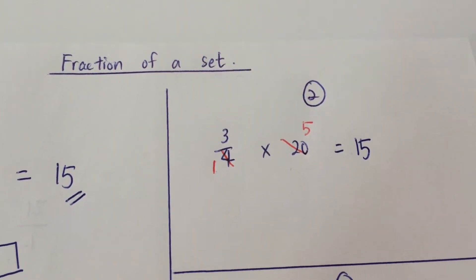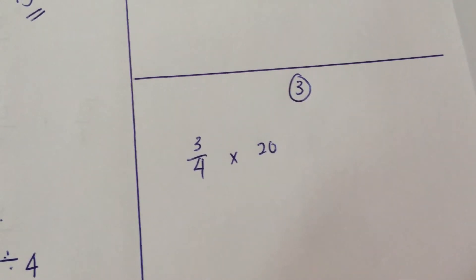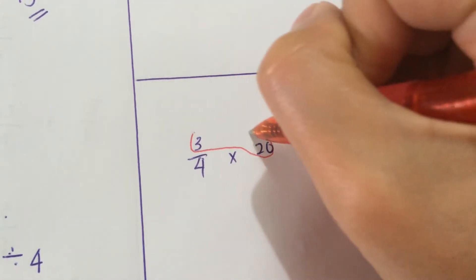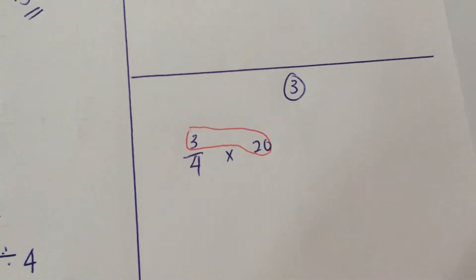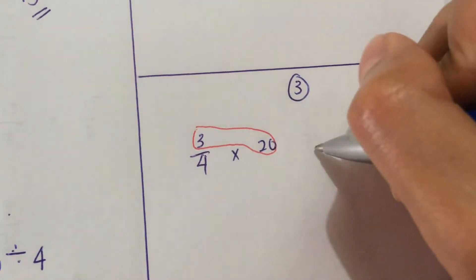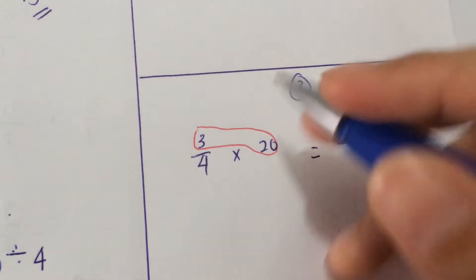The third method is to take the numerator and multiply by the whole number. So, 3 times 20 is 60. Denominator is 4.